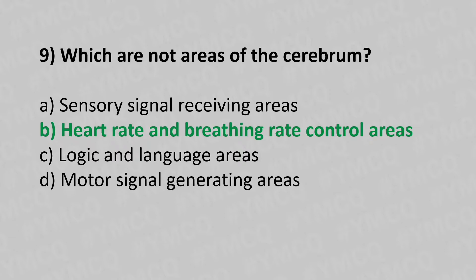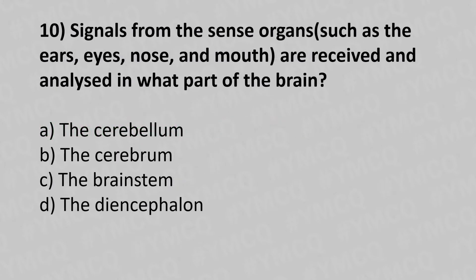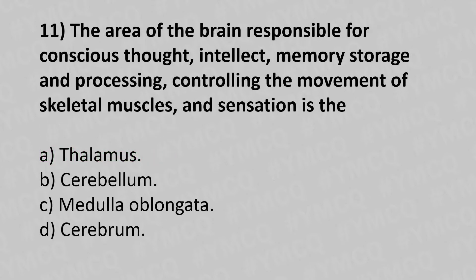Question 10: Signals from the sensory organs such as ear, eyes, nose, and mouth are received and analyzed in what part of the brain? Option A: cerebellum. Option B: cerebrum. Option C: brainstem. Option D: diencephalon. The answer is Option B — the cerebrum.